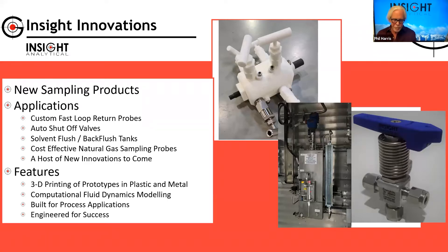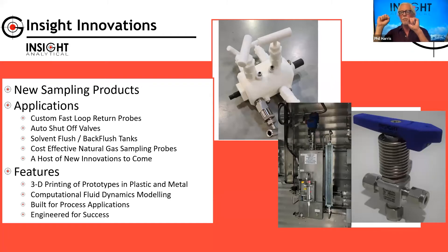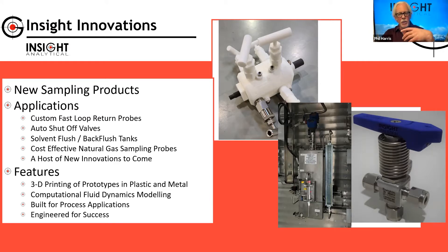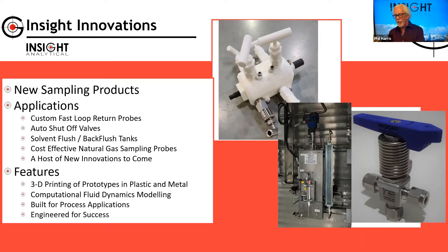Looking at other products shown here: the one that looks like a manifold is a probe that will sample and return to the same process, with double block and bleeds on both sides. We also have a solvent flush tank for applications where we want to keep systems clean and back flush filters.